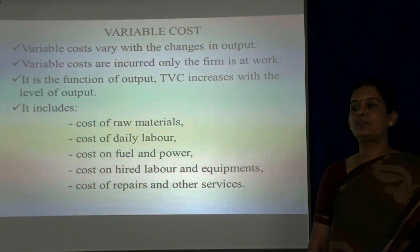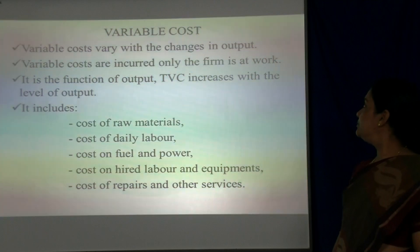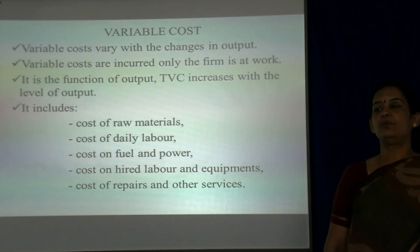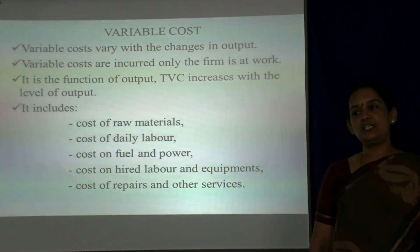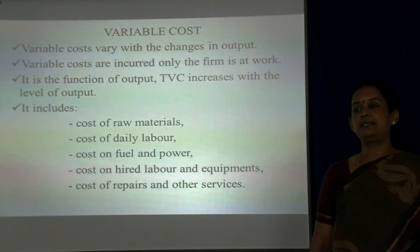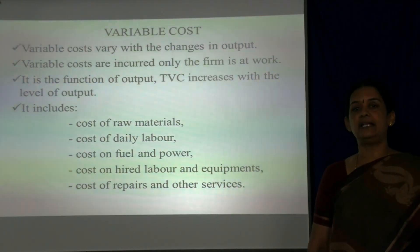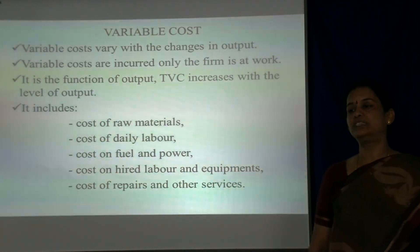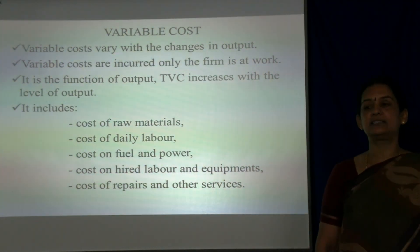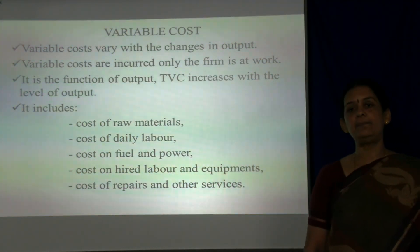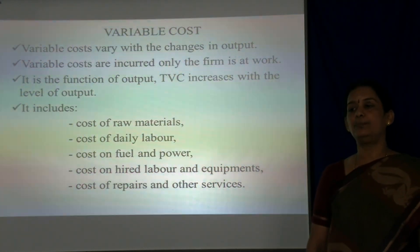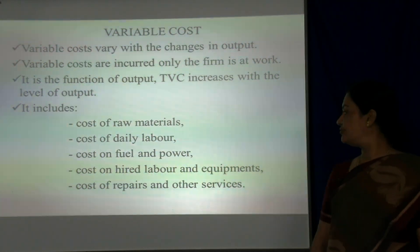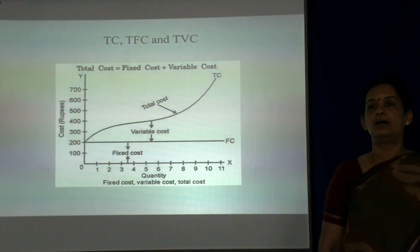Next is variable cost. Variable cost varies with the changes in output and is incurred by the firm when it is at work. It is a function of output. Total variable cost increases with the level of output and it includes cost of raw materials, cost of daily labour, cost on fuel and power, cost on hired labour and equipment, and cost of repairs and other services.